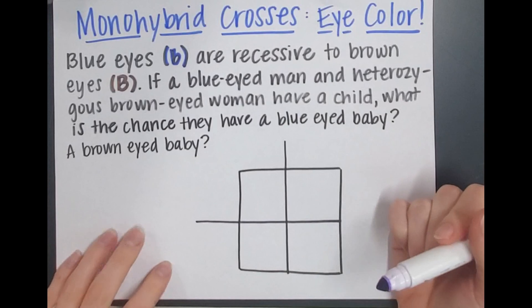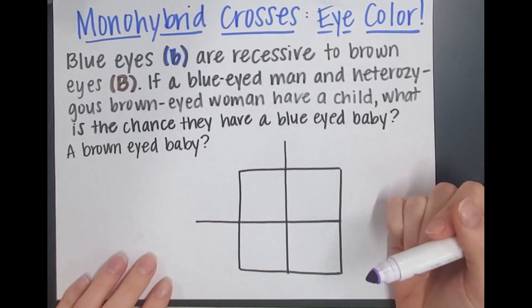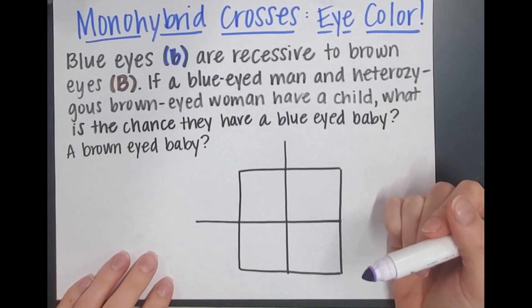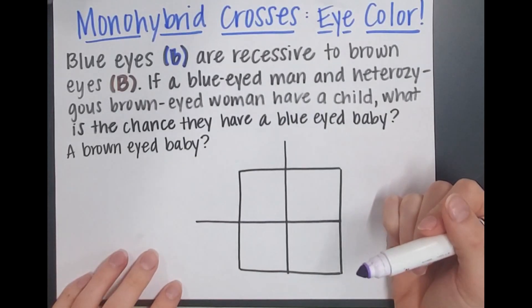If a blue-eyed man and a heterozygous brown-eyed woman have a child, what is the chance that they have a blue-eyed baby or a brown-eyed baby?